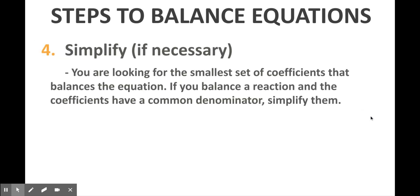Step four, which is really an optional step if necessary, is to simplify. Sometimes when you're balancing an equation you'll add in coefficients and they'll get really big. So it's important at the end to think about whether those coefficients have a common factor, and if so, you can divide them all by that common factor in order to simplify down to the smallest set of coefficients necessary to keep the equation balanced.